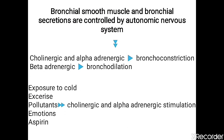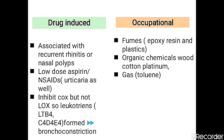These stimuli activate cholinergic and alpha-adrenergic fibers, leading to bronchoconstriction. Asthma is an obstructive lung disease, so symptoms arise when the patient exhales, because in obstructive lung disease the problem is with expiration — air is taken in normally but cannot be expelled. Drug-induced and occupational asthma also fall under the non-atopic and intrinsic category.